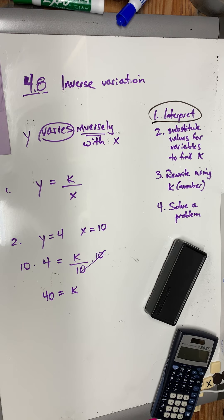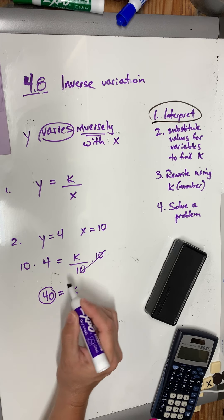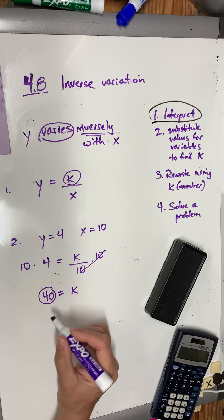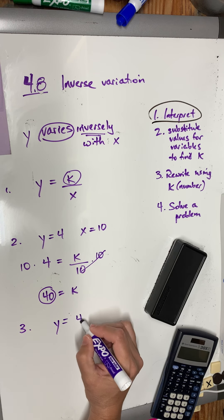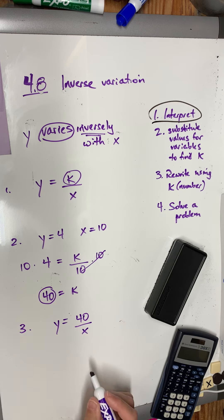They want me to find the inverse variation equation when y is 4 and x is 10. So, what they want me to do is replace my k with its numerical value. So, this would be step 3. y equals 40 over x. And this is my answer.